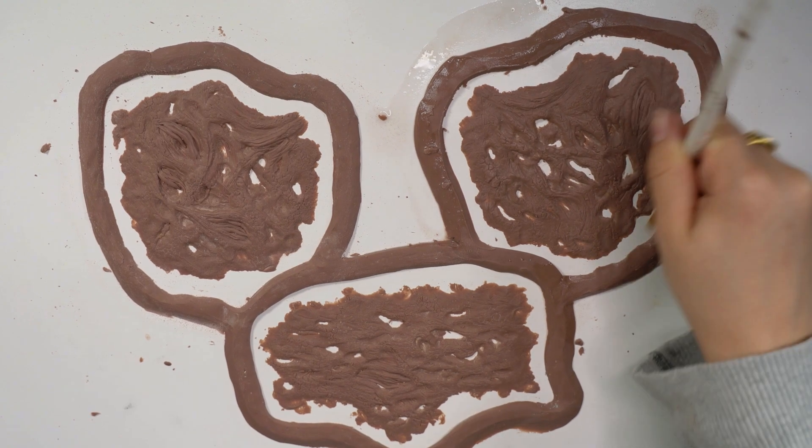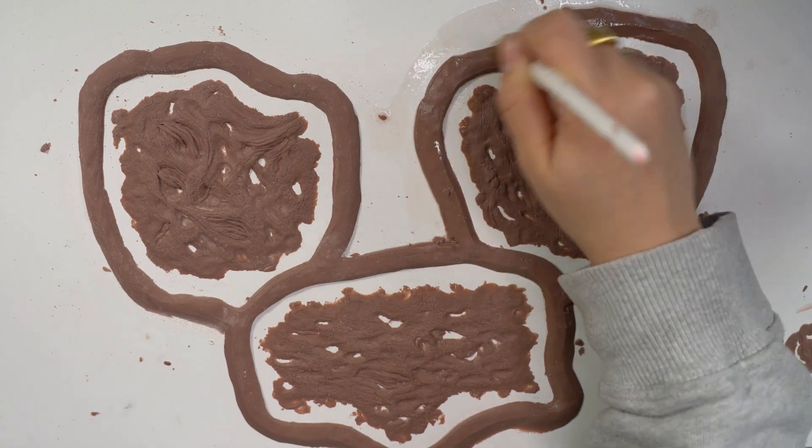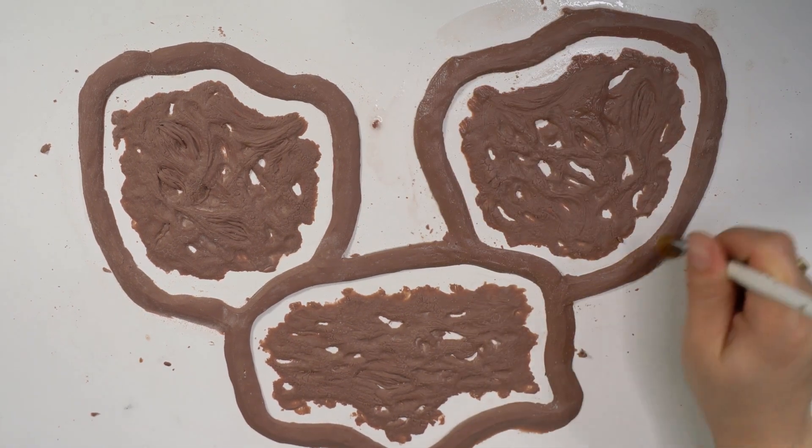When I first started out, I would just have it as a super harsh line and every time I would demold it, the cap plastic would just keep tearing. But after I started smoothing it out, it's a lot better.